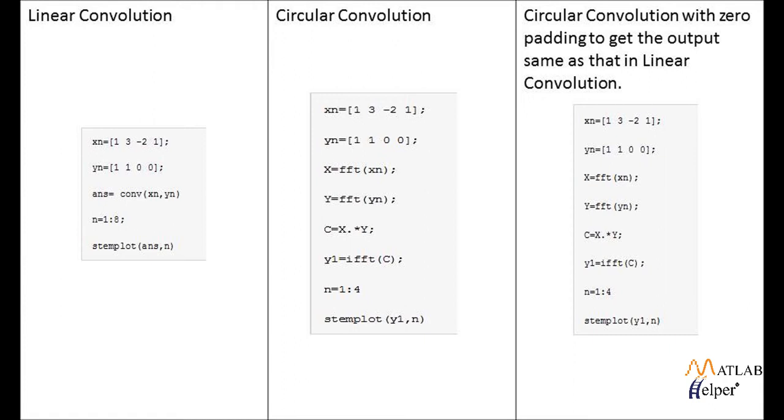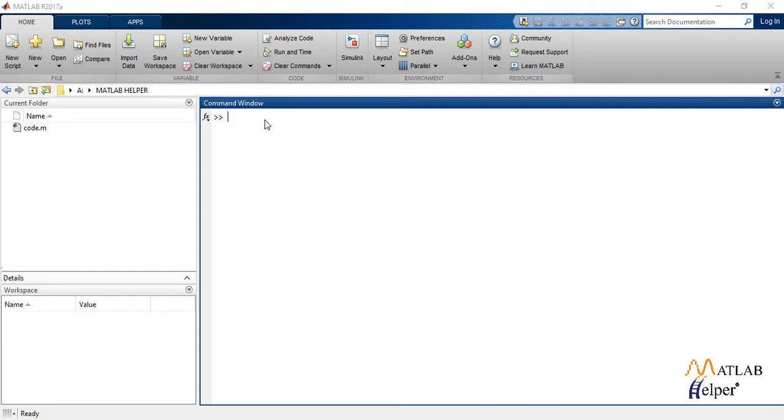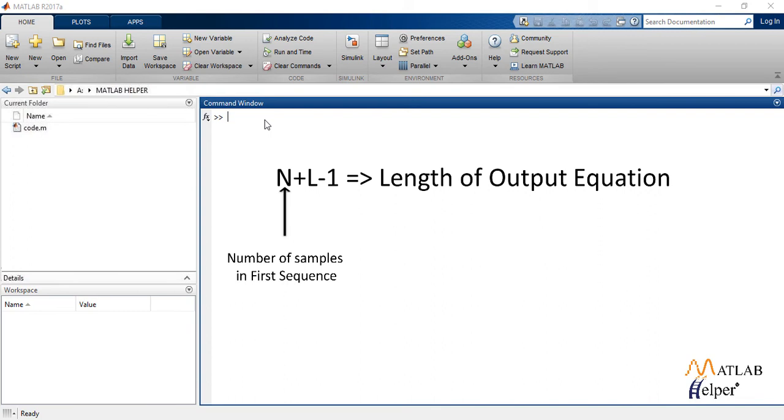To obtain same result from linear and circular convolution, we first calculate the length of output sequence by the equation n plus l minus 1, where n is number of samples in first sequence and l is number of samples in second sequence.